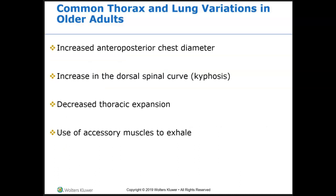Common thoracic and lung variations in older adults: as adults age, they get exposure to chronic conditions over time. There could be an increased anterior-posterior chest diameter, an increase in the dorsal spinal curve or kyphosis, decreased thoracic expansion, and use of accessory muscles specifically to exhale, because the alveoli collapse at the end of the breath, trapping CO2. There are expected decreases in older adults' organ function as we age, which we will discuss more in depth when we cover respiratory.